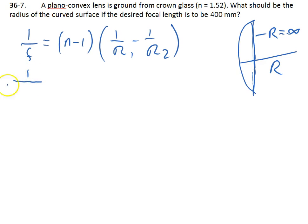And by direct substitution, we have 1 over 400 mm is equal to 1.52 minus 1 is 0.52 times 1 over r1, which is what we wish to calculate. Sorry, that should have been a positive addition sign in the brackets above. Plus 1 over infinity.